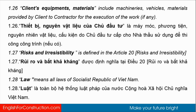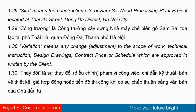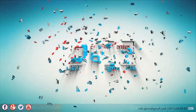1.28 Law means all laws of the Socialist Republic of Vietnam. 1.29 Site means the construction site of Samsa Wood Processing Plant Project, located at Thai Nguyen. 1.30 Variation means any change or adjustment to the scope of work, technical instruction, design drawings, contract price, or schedule, which are approved in writing by the client.